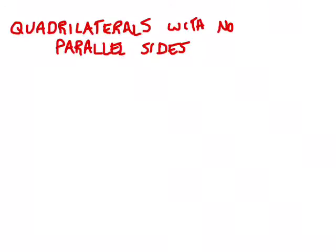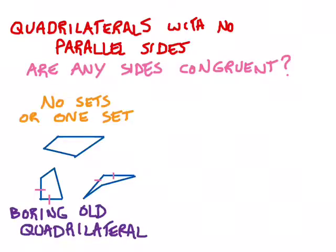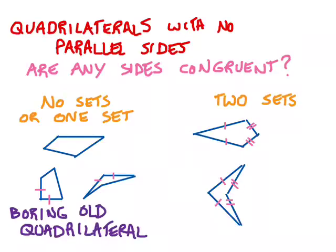Returning to quadrilaterals that have no parallel sides — there are a couple different types. You can ask a follow-up question: are any of the sides congruent, meaning do they have the same length? If there are no sets of congruent sides, or only one set of congruent sides, then you're looking at nothing special — just a standard quadrilateral. On the other hand, if it has two sets of congruent sides, then you're looking at either a kite or a dart.